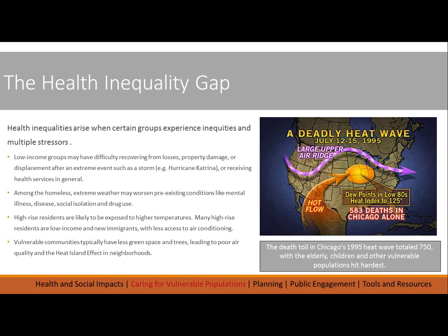Where there are inequalities in a community, major climate events can exacerbate those inequalities and vulnerabilities. Low-income groups may have difficulty recovering from losses, property damage, or displacement after an event such as a storm — we saw that happen post-Hurricane Katrina. Among the homeless, extreme weather may worsen pre-existing conditions like mental illness, disease, or social isolation. Many high-rise residents are low-income and new immigrants, and during an extreme heat event they may have less access to air conditioning, or during an extreme storm they may lose power and be unable to leave the building.